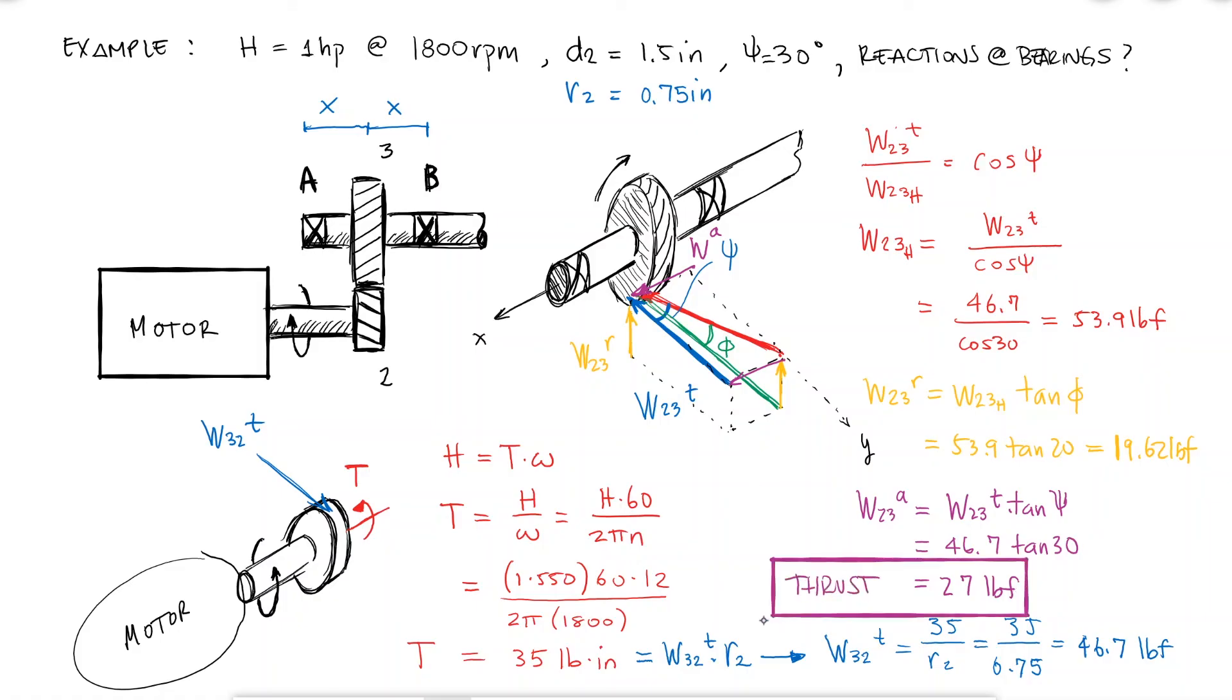So half of it will be supported by bearing A and the other half by bearing B. This does not cause bending and as I mentioned before, we don't take it into account for the design of the shaft. This is information we'll use when selecting a bearing.